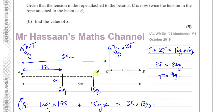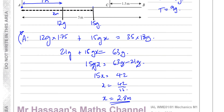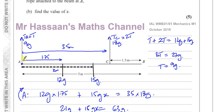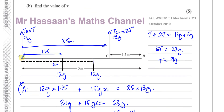So x = 2.8 meters, meaning the 15 kg particle is placed 2.8 meters from A. That's the answer for Part B and the end of the question. Instead of supports, we had ropes holding up the beam, but the method is essentially the same.